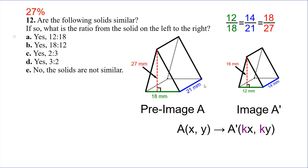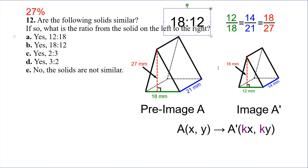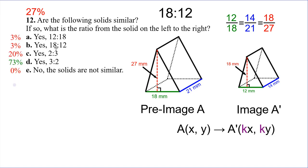They want to know what's the ratio. If we wrote a scale factor it would be two-thirds. But if we write it as a ratio, it's going to be bigger to smaller, left to right, which would be 3 to 2. You can write the ratio as 18 to 12 and reduce it, which gives you answer B: three over two. The 2 to 3 would be going backwards. Be careful: don't confuse scale factor and ratio — those are commonly confused by lots of people.